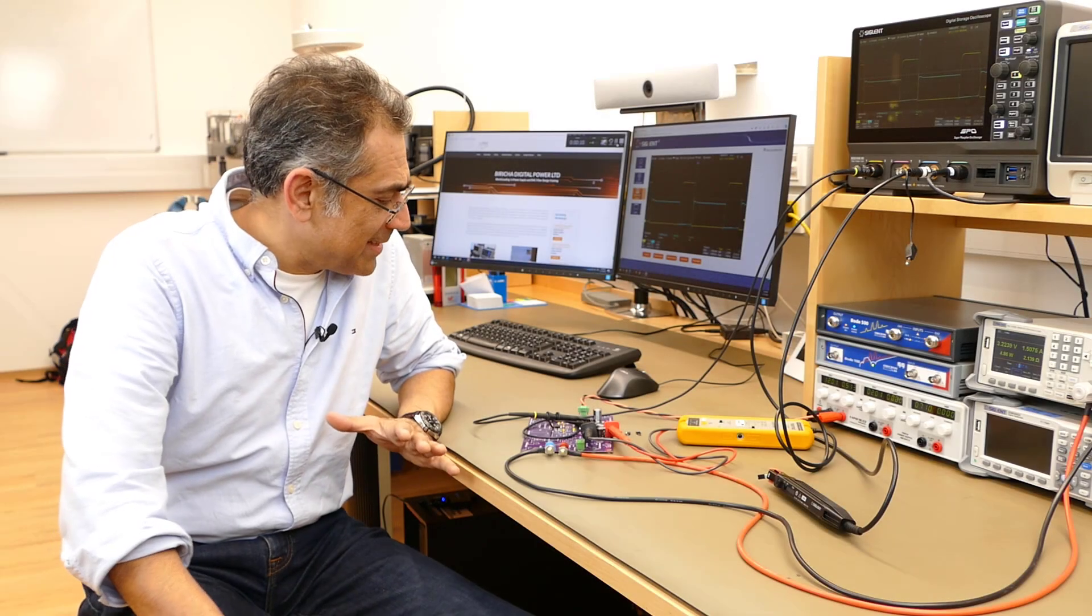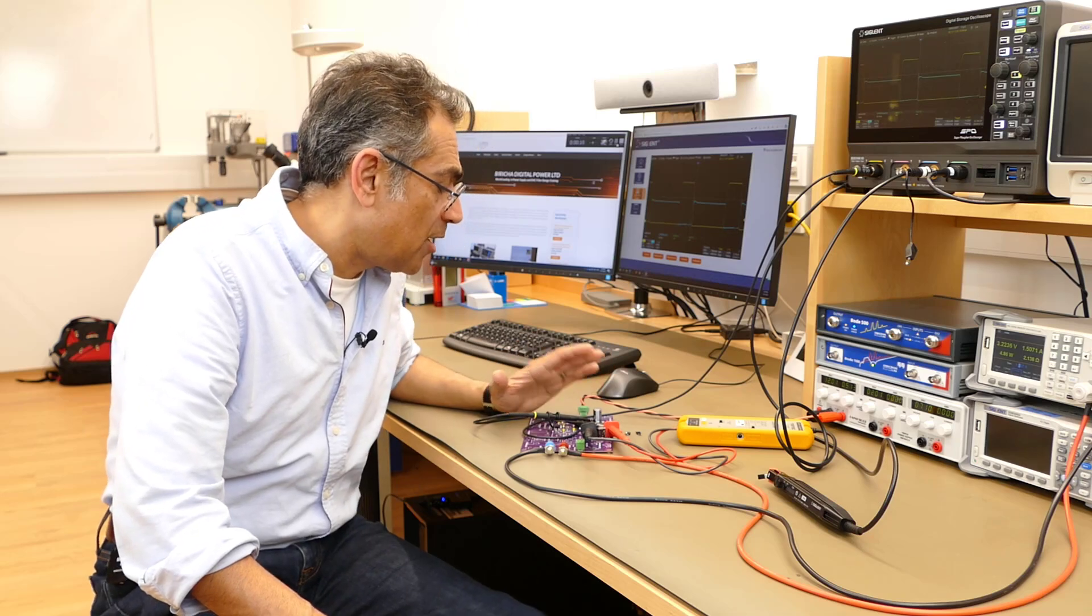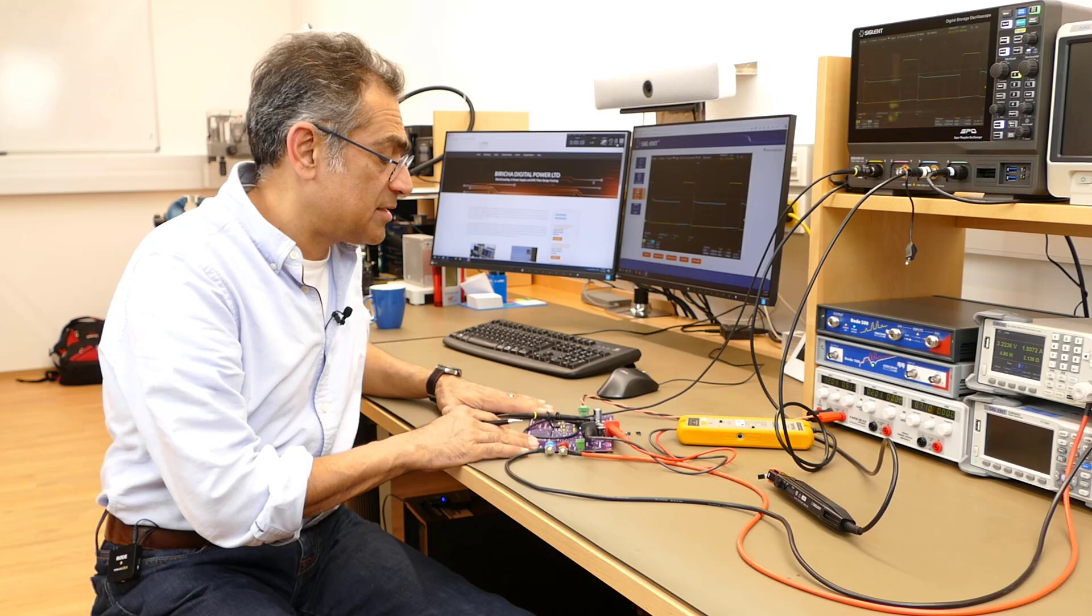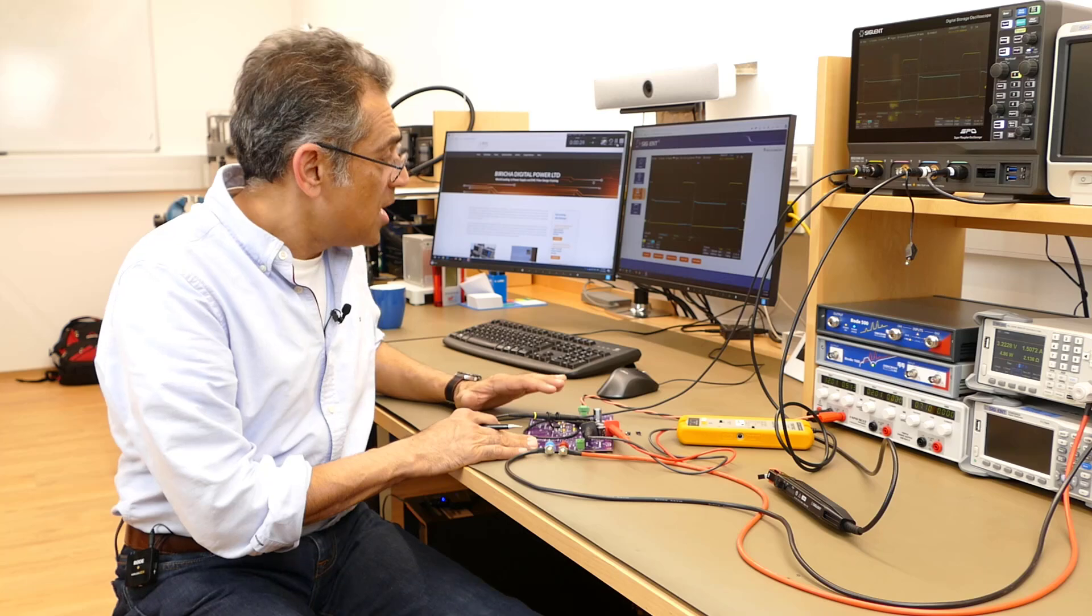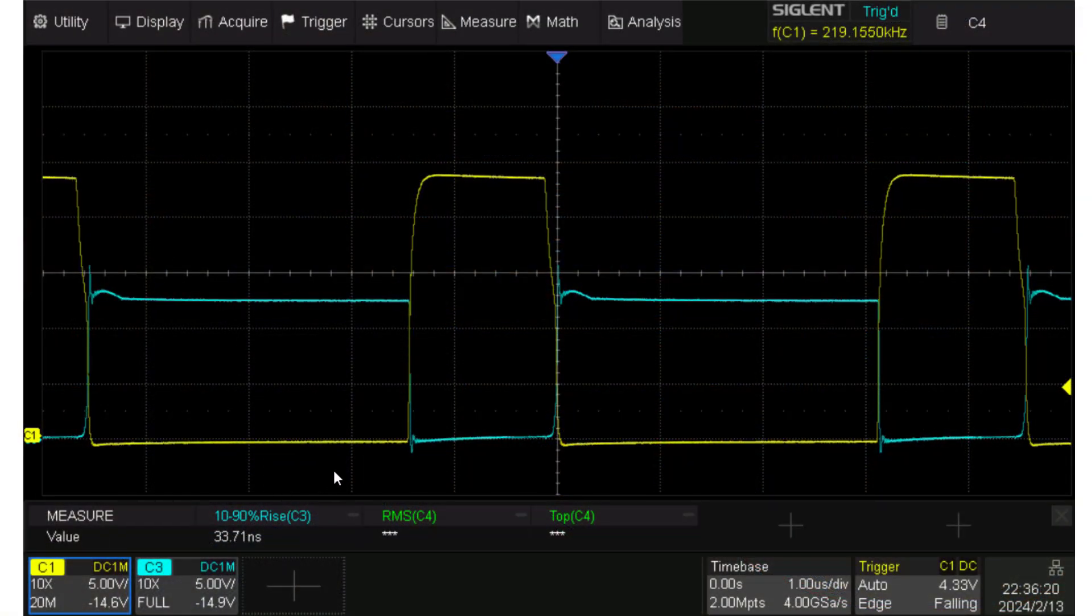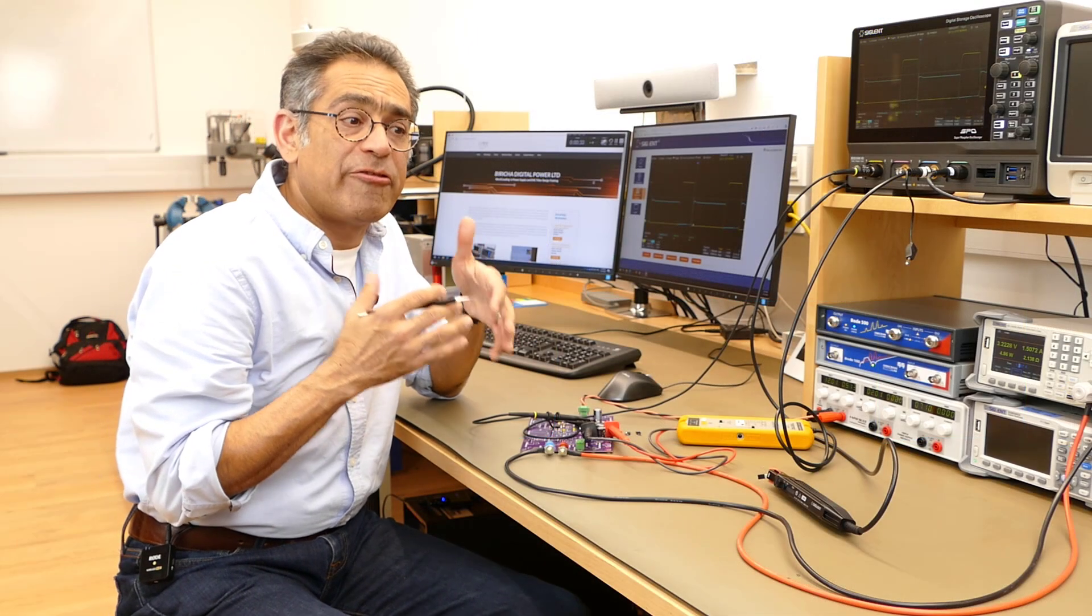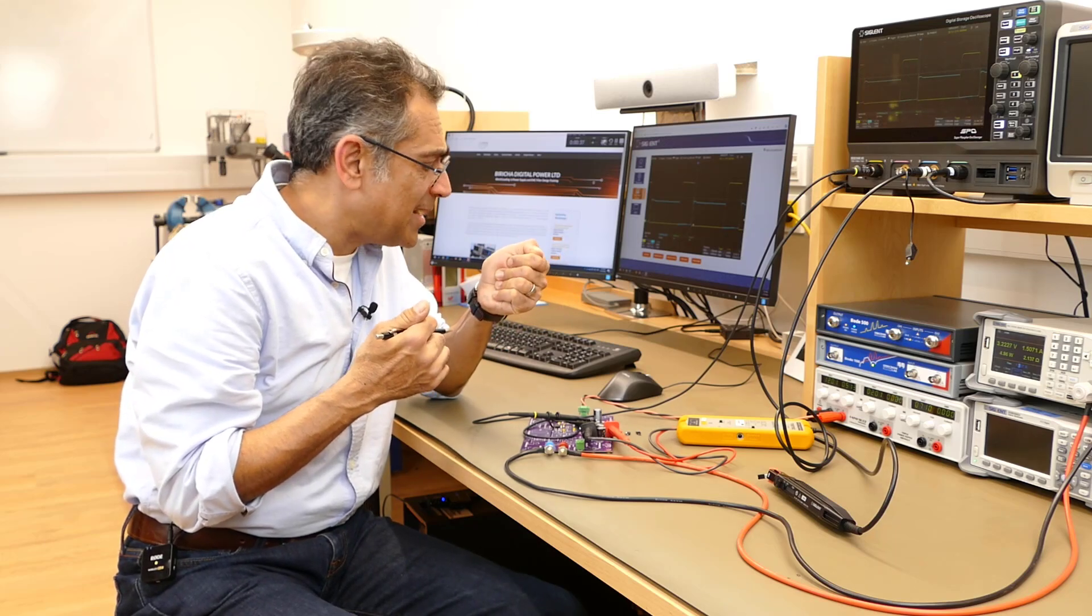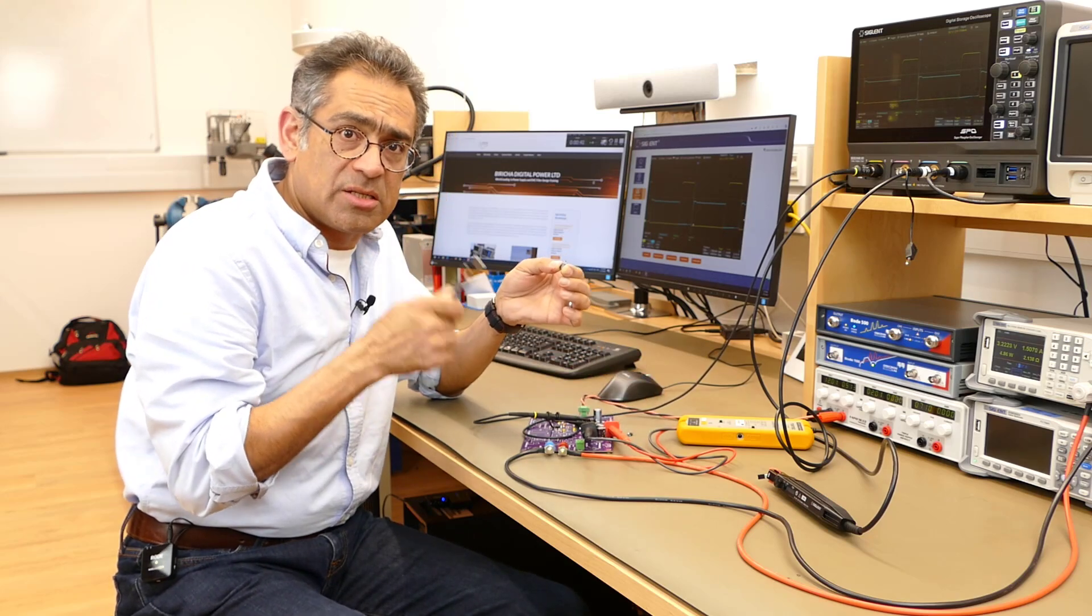So here we are in the lab and we're going to show the turn off time of the MOSFET as we change the value of the turn off resistor. This is a buck converter. This is a type of setup that we have in our workshops. I am displaying with the yellow trace the gate signal. On purpose I have slowed it down very much so that we can see things quite easily.